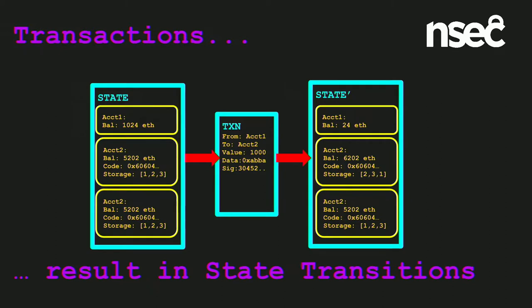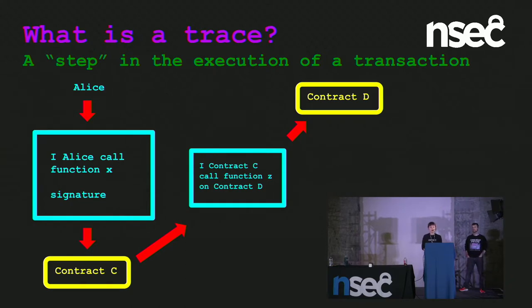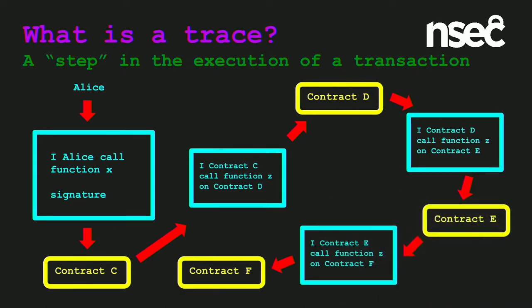Transactions result in state transitions — they can update any of the state properties. During this presentation, we're going to talk about traces, also sometimes called message calls or internal transactions. You can think of these as a step in the execution of a transaction. So contract C calling contract D would result in a two-trace transaction. It can call another contract — now we have three traces — and so on. They spiral out in possible complexity.